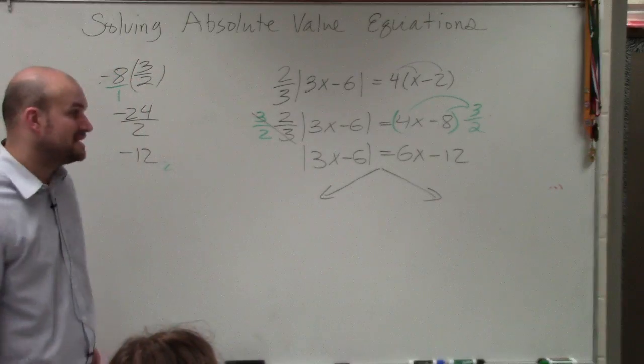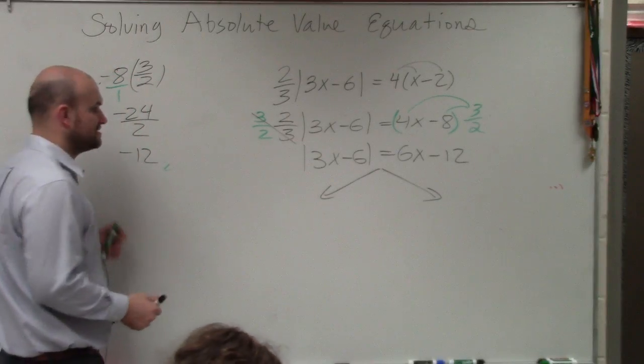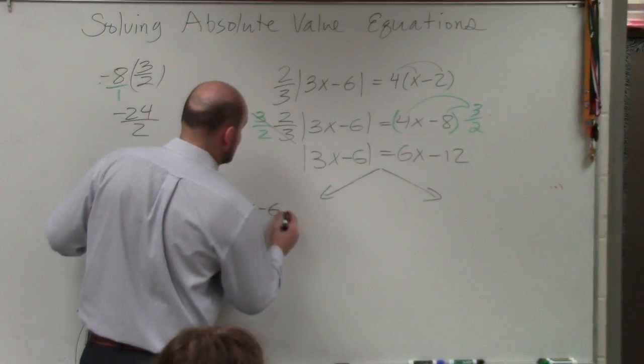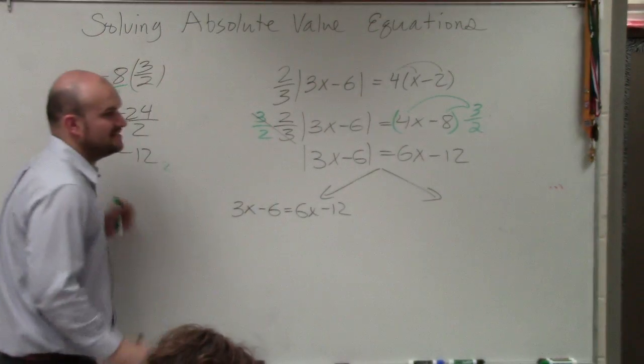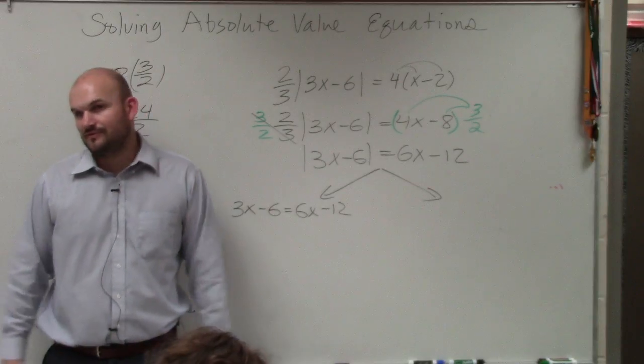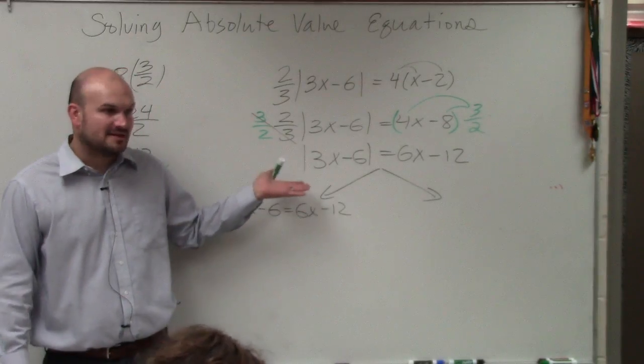Now we have to do step two, create our two cases. So we have 3x minus 6 equals 6x minus 12. The first case, guys, is really the easiest. Everybody should have the first case. You just rewrite the problem without the absolute value.